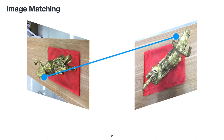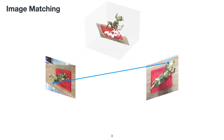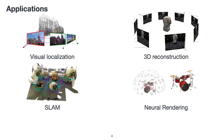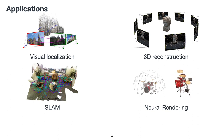Image matching aims to find corresponding pixels between two images. Multi-view geometry can then be applied to compute camera intrinsics, poses, and the 3D location of the corresponding pixels. As one of the most fundamental computer vision problems, image matching enables many applications such as visual localization, 3D reconstruction, SLAM, and neural rendering.